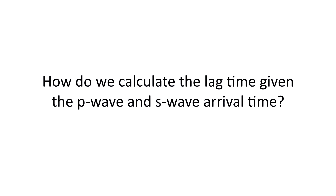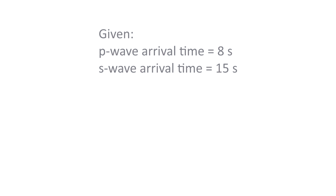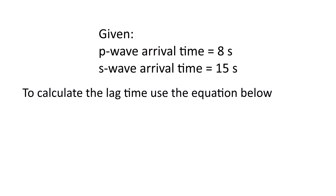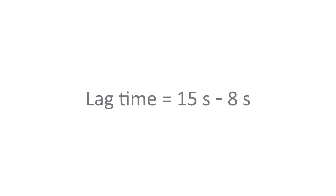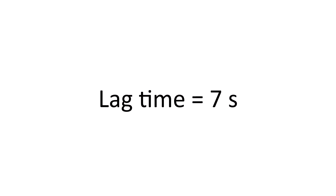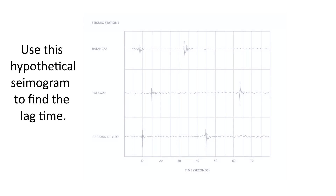How do we calculate the lag time given the P wave and S wave arrival times? For example, if the P wave arrival time is 8 seconds and the S wave arrival time is 15 seconds, we calculate the lag time using the equation: lag time equals S wave arrival time minus P wave arrival time. So we have 15 seconds minus 8 seconds, giving a lag time of 7 seconds.